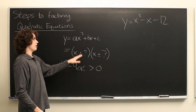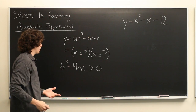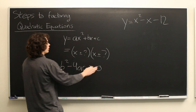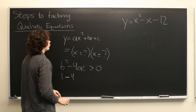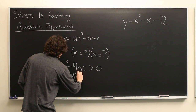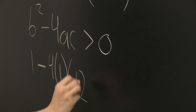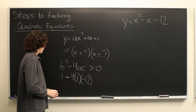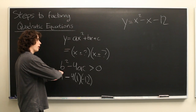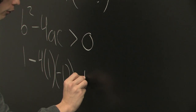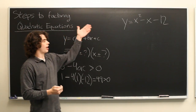Where a, b, and c correspond to those in our equation. Let's plug those numbers in: b squared — our b is negative 1, so negative 1 squared is 1 — minus 4 times a, which is 1, times c, which is negative 12. It's important to keep track of your negative signs here. 4 times 1 is 4, times negative 12 is negative 48. So 1 minus negative 48 equals 49, which is clearly greater than 0. Great, so we know that this can be factored.